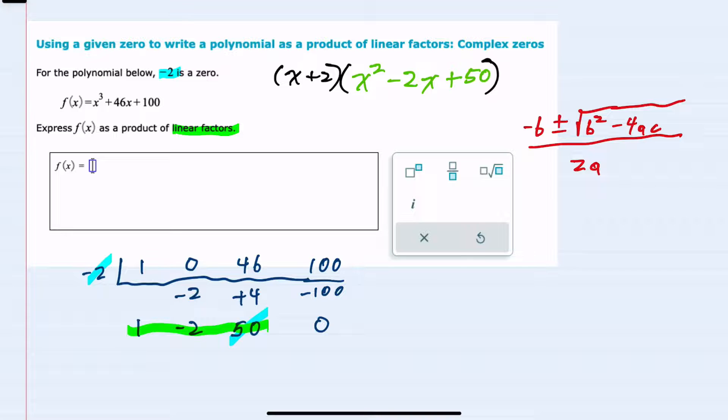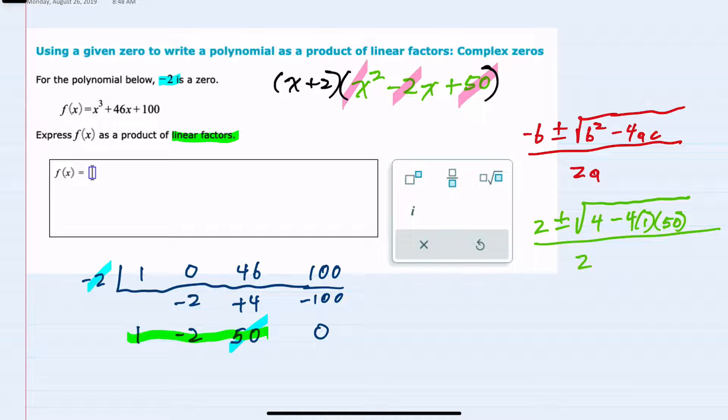Here my b is negative 2. So a negative b would be 2 plus or minus the square root of b squared. So negative 2 squared is 4, minus 4 times a. Here my a is 1 times c. And here my c is 50. And this is over 2 times a, or 2 times 1.